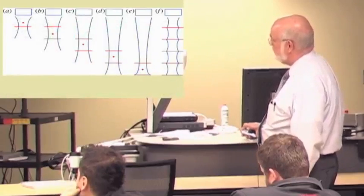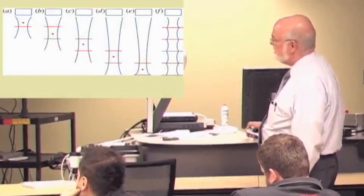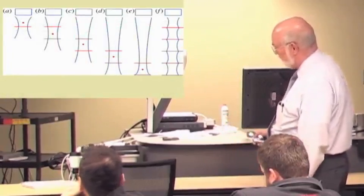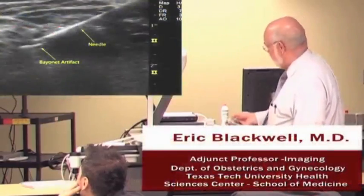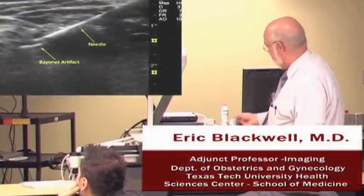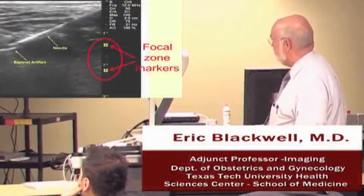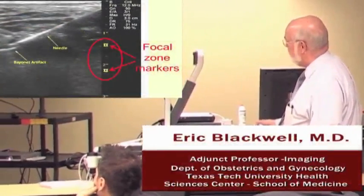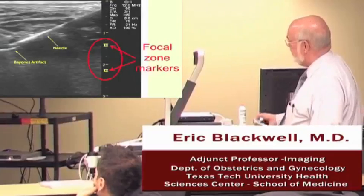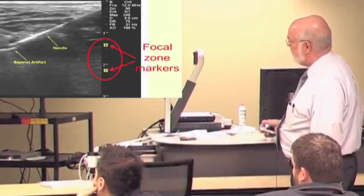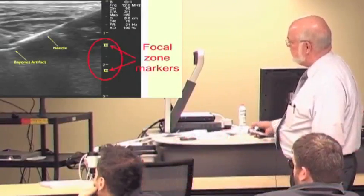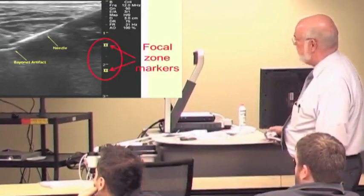Now, we can even have multiple focal zones, although the trade-off here is it slows the frame rate down because the computer is having to work harder. So, again, if you look at our example of the bayonet artifact here, what I want you to look at is actually the little displayed hourglass figures over here on the side, and that shows where the focal zone is set for this examination. And this is about right. It should be the distance between these should be somewhere in the area that you're most interested in.